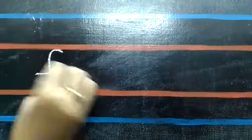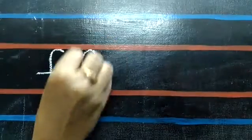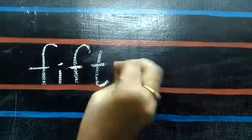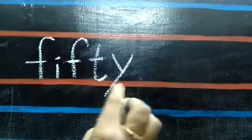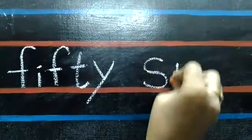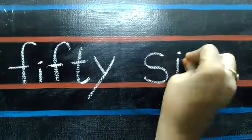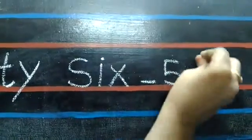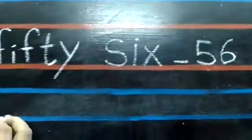After 55, you should write 56, children. F-I-F-T-Y, fifty. S-I-X, 6. Fifty-six, 5-6, 56.